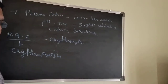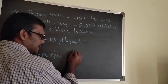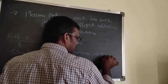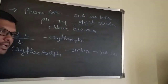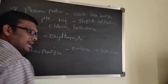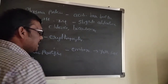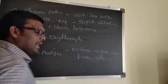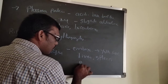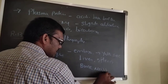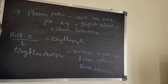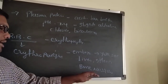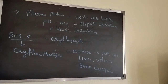Where does RBC production take place? In the embryonic stage it is formed in the yolk sac. In the next stage it is formed in the liver and spleen. Finally it is formed in the bone marrow region.